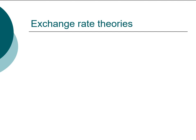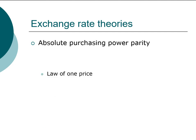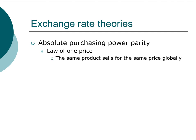To better understand covered interest arbitrage, it helps to look at two economic theories related to exchange rates. The first is absolute purchasing power parity, which is an extension of the law of one price. The law of one price says that the same product must sell for the same price everywhere — otherwise, competition will drive prices to be equal. Absolute purchasing power parity extends this law globally. However, this theory does not hold well in practice, and understanding why it fails is important.